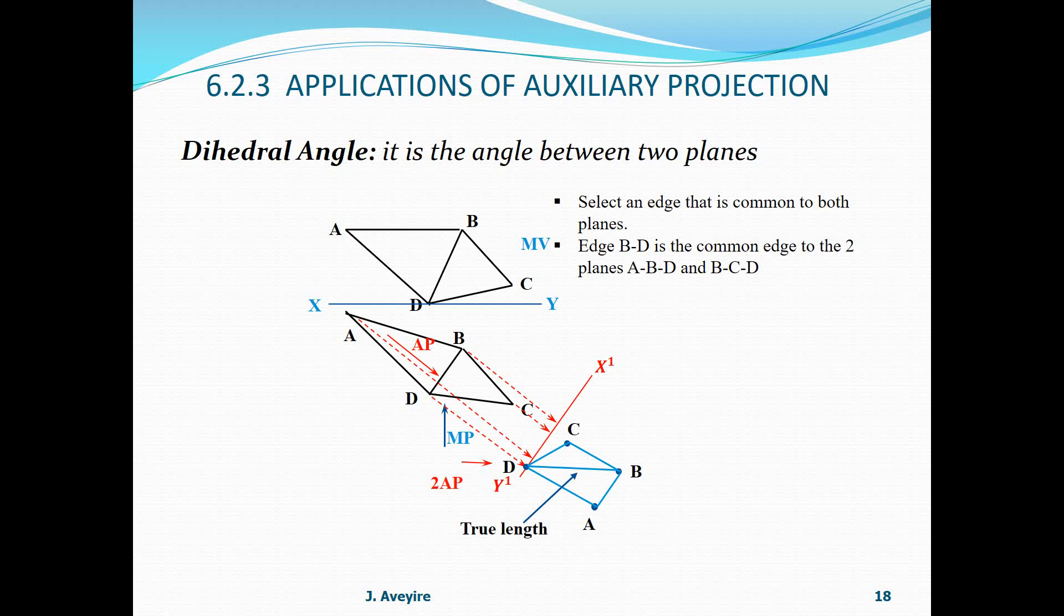Therefore, if we project along BD, which is our second auxiliary projector, that is 2AP, since it is common to the two planes, the two planes will appear as an edge. Therefore, the angle between these two edges will give us our dihedral angle. Since that is a second auxiliary projection, we need to first find our second mutual view, which must be our plan. We need also our second auxiliary mutual projector, which is in opposite direction to AP.